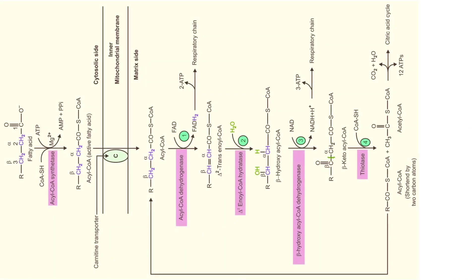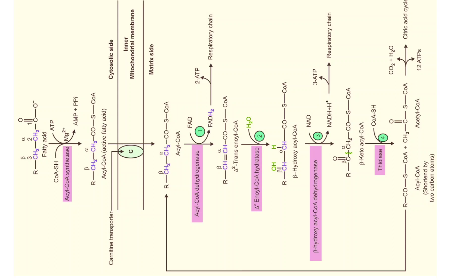The remaining 14-carbon fatty acid again undergoes oxidation, hydration, oxidation, and thiolysis. These four steps are repeated in the beta oxidation cycle until all the carbons in the fatty acid are removed in the form of acetyl-CoA. This is what happens in the mitochondrial beta oxidation cycle.